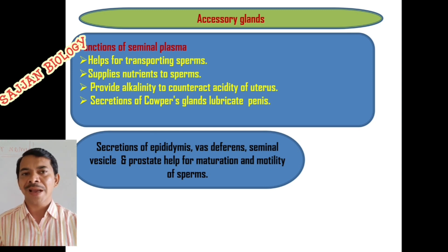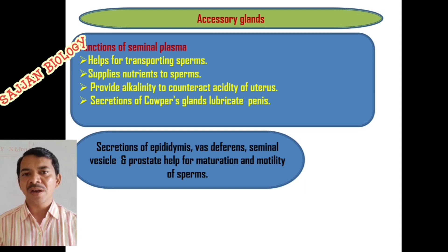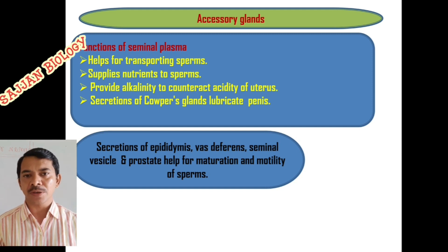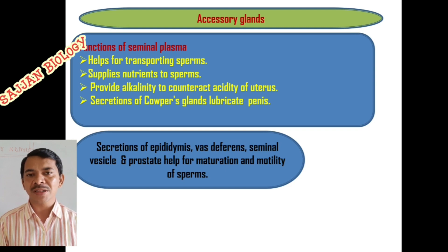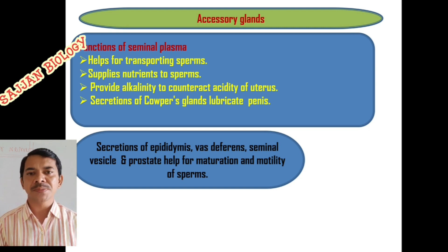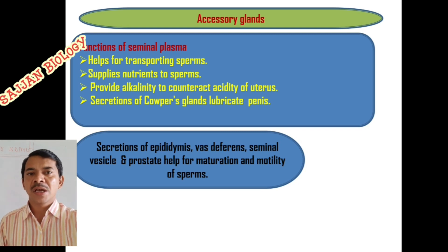Seminal plasma also provides alkalinity to counteract the acidity of the uterus after copulation. The uterus, which receives the gametes, has an acidic nature. To avoid this, the seminal plasma neutralizes that acidic condition — otherwise the sperms would die in the uterus and there would be no chance of pregnancy. The secretion of the corpus gland lubricates the penis.